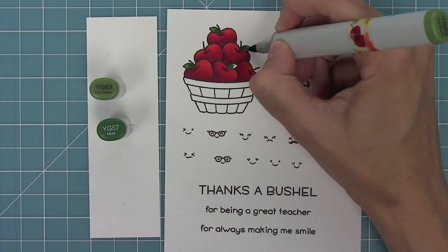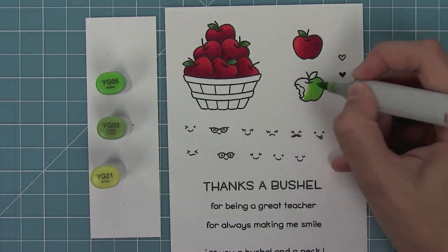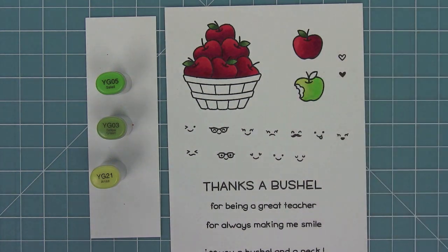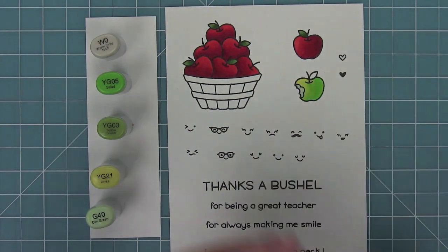I'll color in the leaves for the apples, and then I'm going to color in the apple with a bite out of it like a Granny Smith apple. For the bite area, I'm actually going to layer over a gray marker to make it look a little bit more like the bit area of an apple.